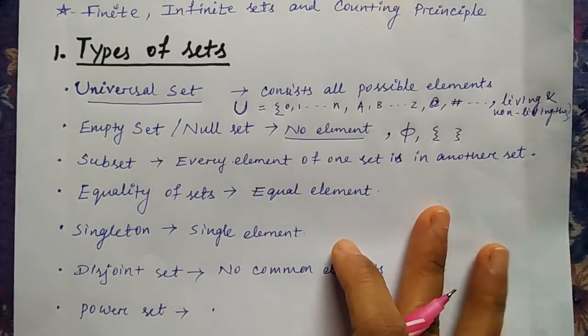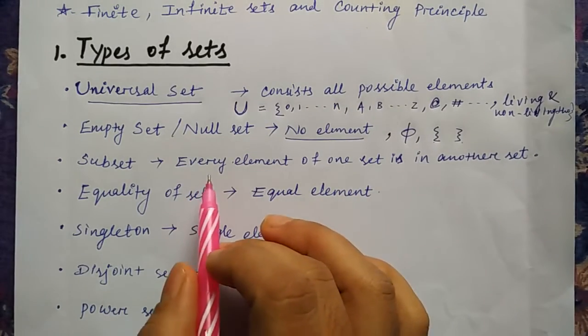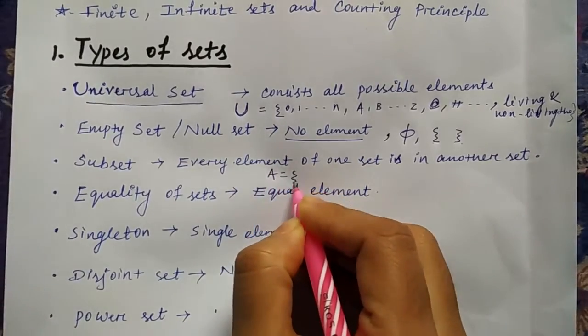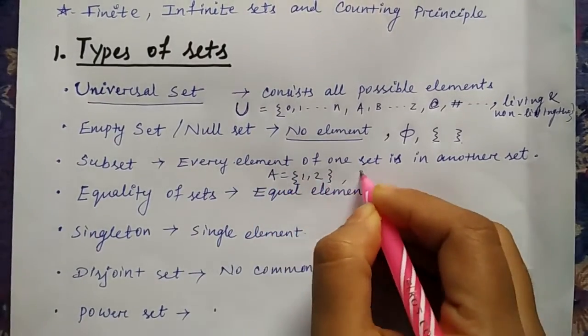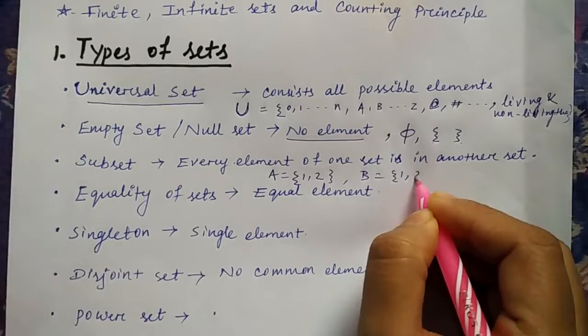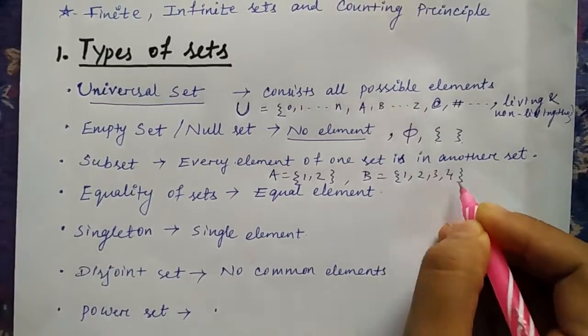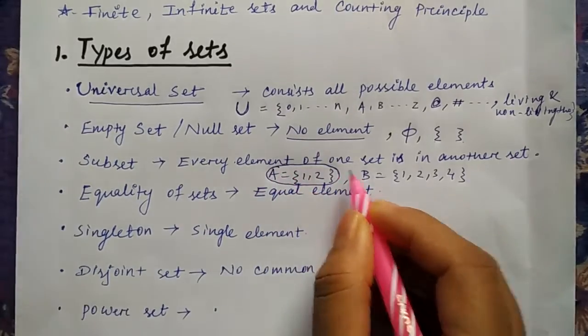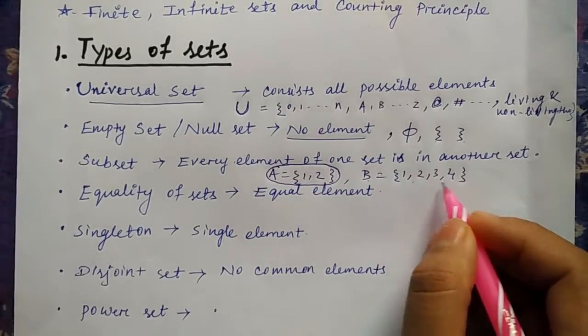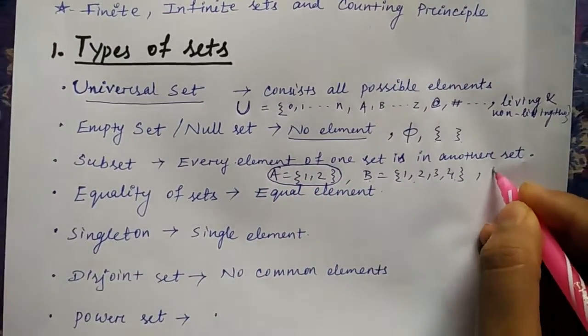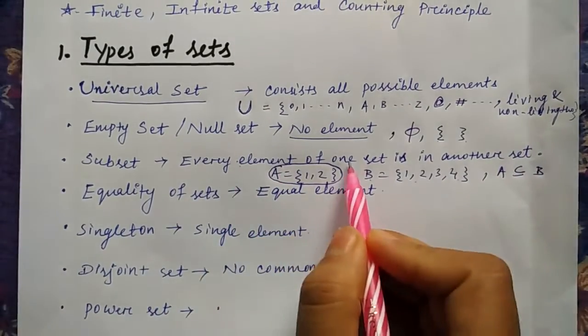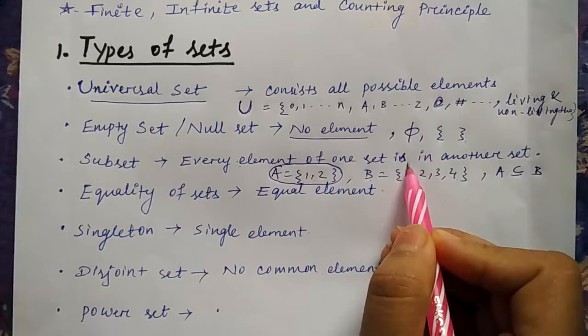Then comes the subset. I will tell you in easiest terms: if you have two sets like A = {1, 2} and B = {1, 2, 3, 4}, so here you can clearly see that whatever the element of A is completely present in B along with some extra elements. In this case, A will be called as the subset of B.